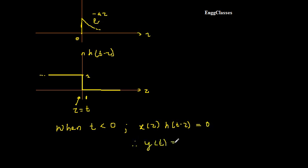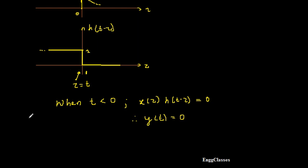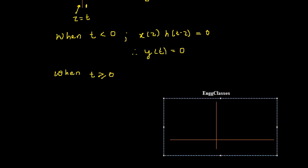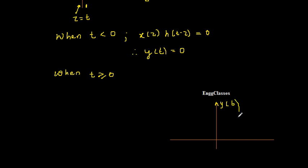So under the condition t < 0, the signal is shifted to the left, there is no overlap, and the answer is y(t) = 0. Now I consider the case when t ≥ 0, meaning I shift h(t−τ) to the right. Let me sketch both signals to make the overlap region clear.